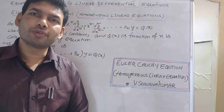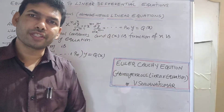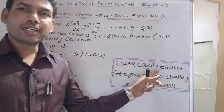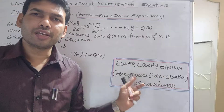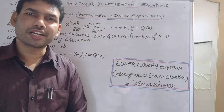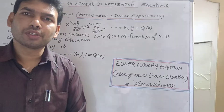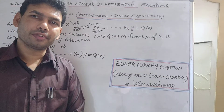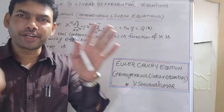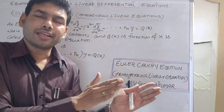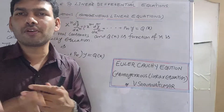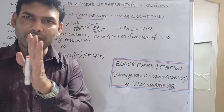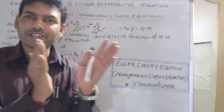Equations reducible to linear differential equations. The topic is Euler-Cauchy equations — homogeneous linear equations. We are going to discuss two types of equations: one is Cauchy-Euler and Legendré. We are going to discuss linear differential equations with constant coefficients.